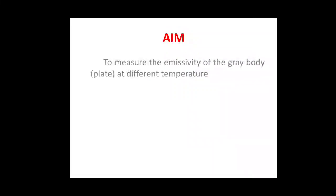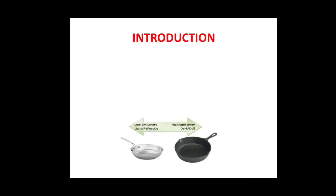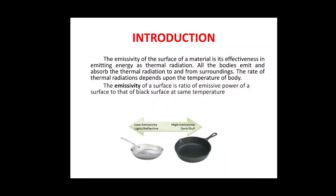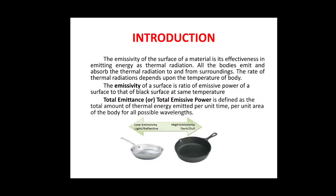The aim of the experiment is to measure emissivity of the gray body, or a gray plate for our particular case, at different temperatures. Before going to the details, we have to know what is emissivity. Emissivity can be defined as the ratio of emissive power of a surface to that of the black surface. Emissive power is defined as the total amount of thermal energy emitted per unit time, per unit area of a body for all possible wavelengths.